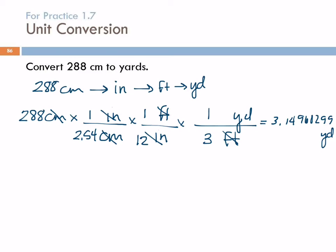And now that we know about significant figures, we can practice that. How many significant figures should the answer have? Three. The starting number had three significant figures. Each of the unit factors here is an exact conversion. Exact conversions do not change the number of significant figures. So we're going to say this is 3.15 yards.